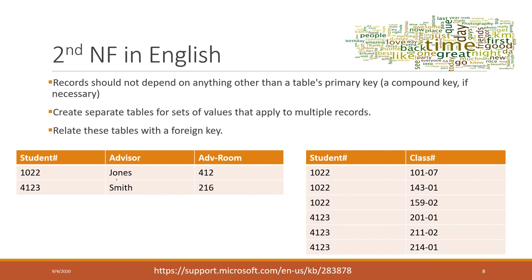Here is the solution from the previous slide. We split the class information from the student information, because class information is separate from students — a class exists independently of students. However, the advisor's information is dependent on the students, because once we know the student, they have only one advisor. But for a class, multiple students are taking that class, so the class is not directly dependent on the student's key.